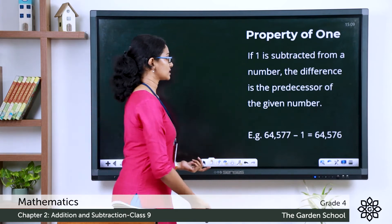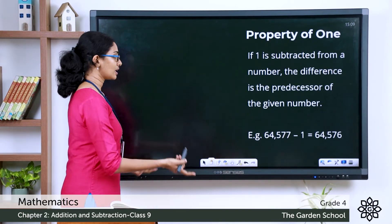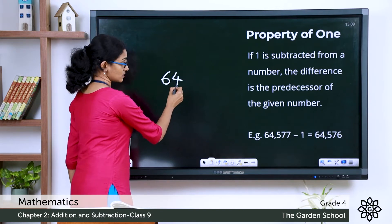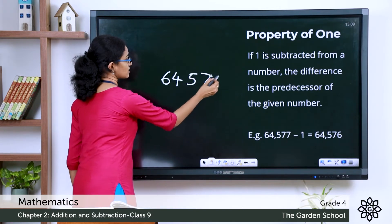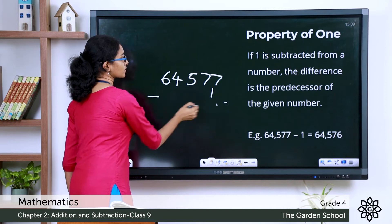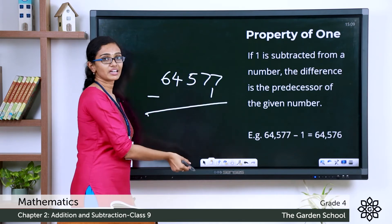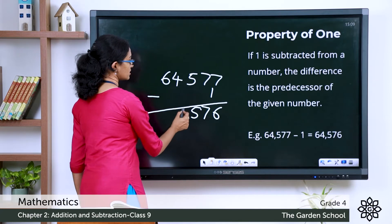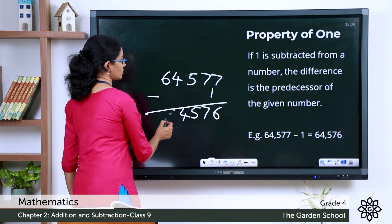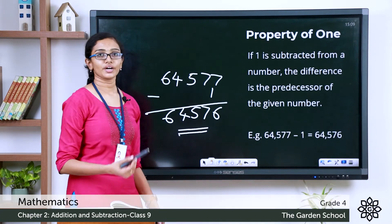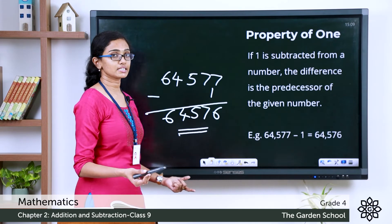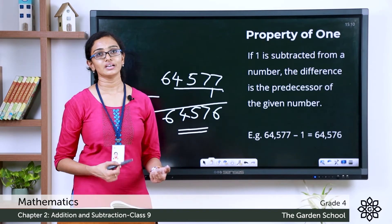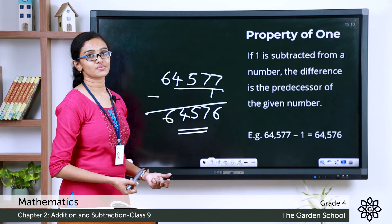So when we subtract 1 from any number, the difference we get is actually the predecessor of the given number. Let's see that with an example: 64,577 minus 1. What is 7 minus 1? It is 6. Bringing all the other digits down, you get 64,576, which is the predecessor of 64,577. Hence the property is verified.